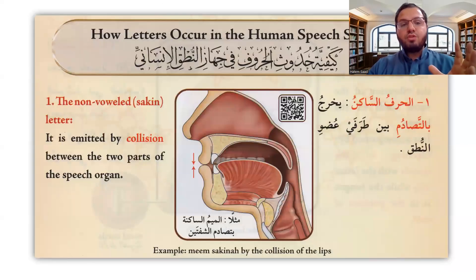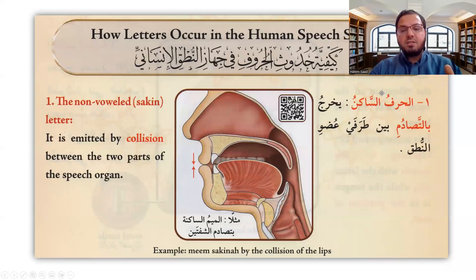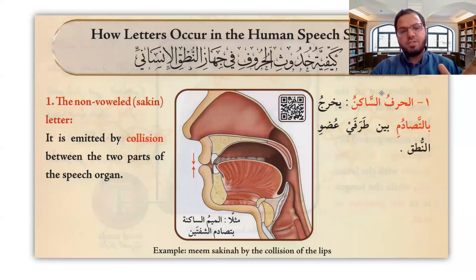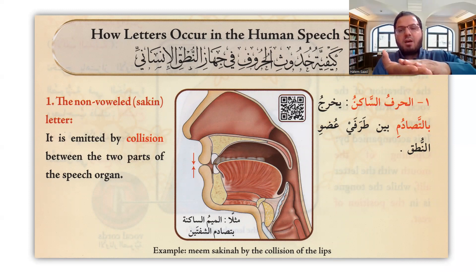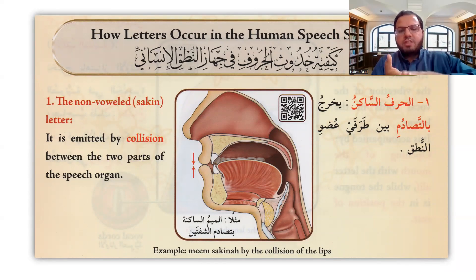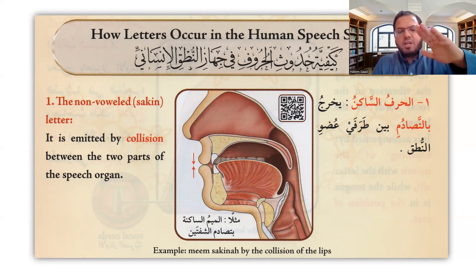If you would like to know how letters occur in the human speech system: the first type is the sakin or non-voweled letters. These letters are emitted by collision — like when you make qalqala and vibration with al-ba, al-qaf, al-dal, or al-ta. We are colliding and producing sound this way.